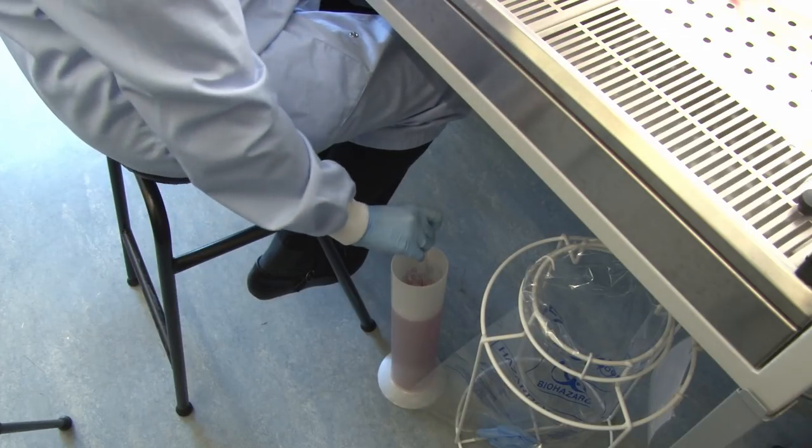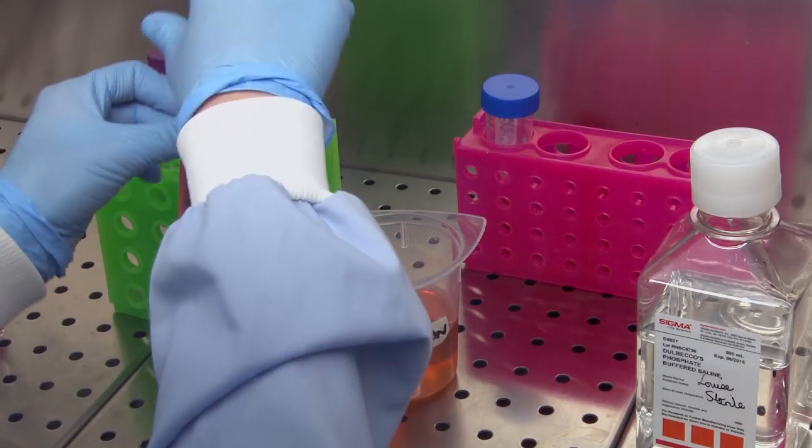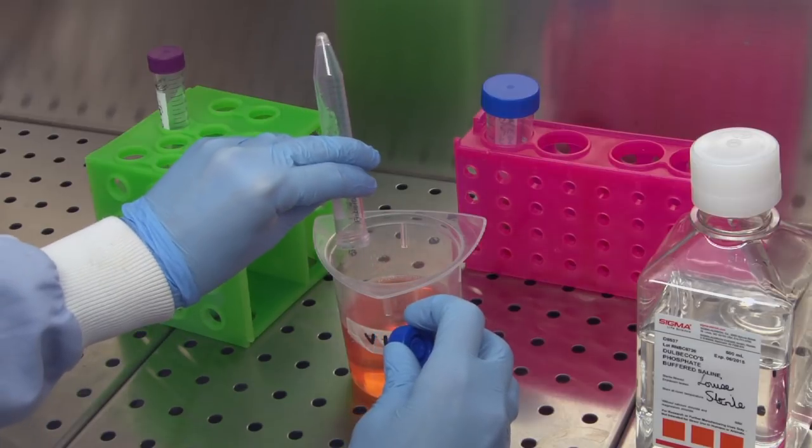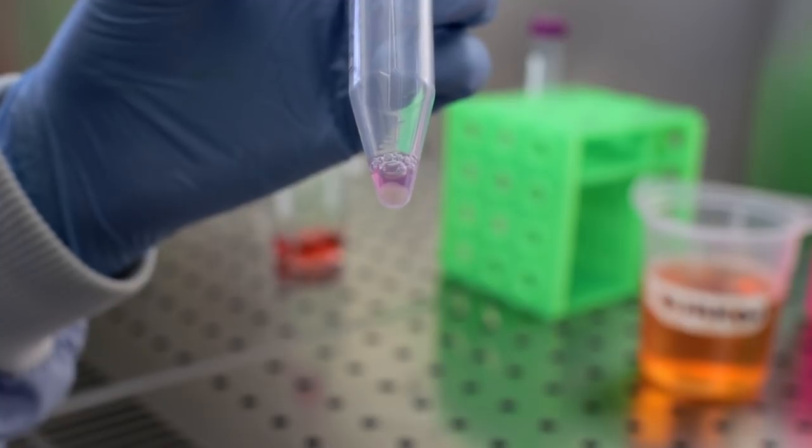The next step is to re-suspend the cells using some fresh culture medium. Invert the flask over the disinfectant in one fluid motion to remove the fluid. Remove all the culture media and avoid dislodging the pellet. Then check that the pellet is still there.